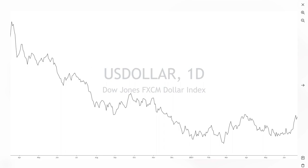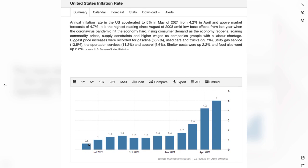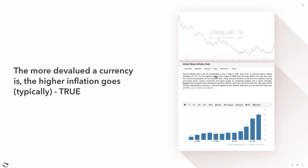Here's an example: the US dollar index, which measures dollar strength against major currencies like the euro, the yen, and the pound. From April 2020, we saw the dollar depreciating — going down. And what happened to inflation? It started going higher and higher from around April–July. You can see the correlation: a weaker, depreciated, devalued dollar results in higher inflation.